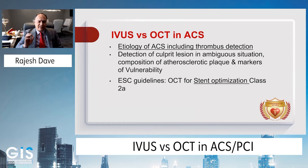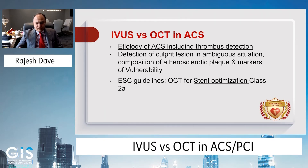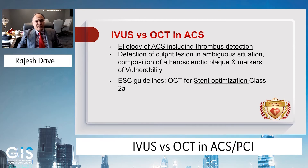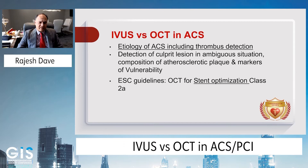OCT is our preferred modality for acute coronary syndrome because the etiology of ACS, especially thrombus detection and detection of the culprit lesion, is very easy with optical coherence tomography, especially in young patients in ambiguous situations such as plaque erosion and other markers of vulnerability. Currently, OCT has a Class 2A indication in European Society of Cardiology Guidelines for stent optimization.